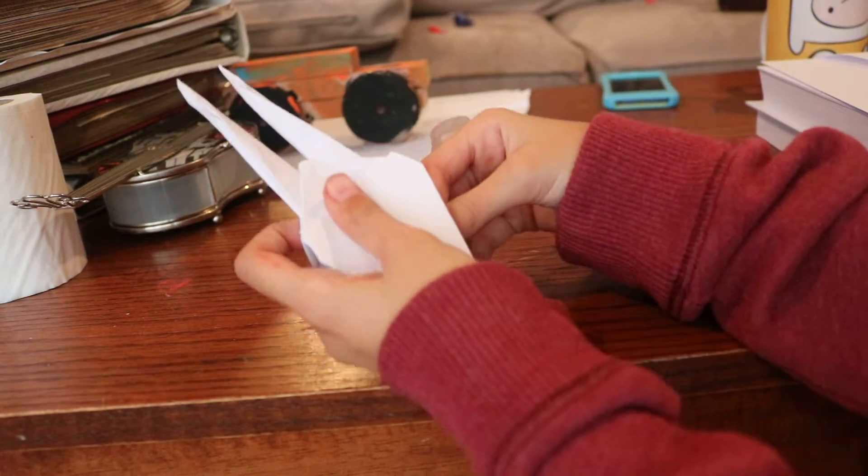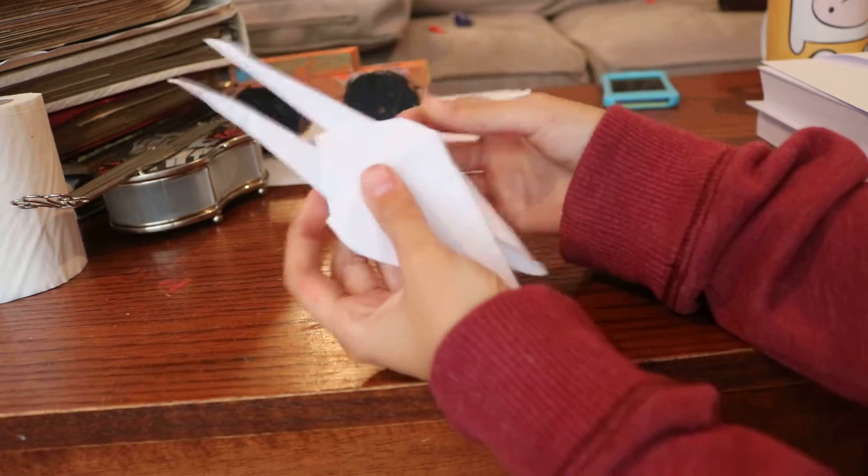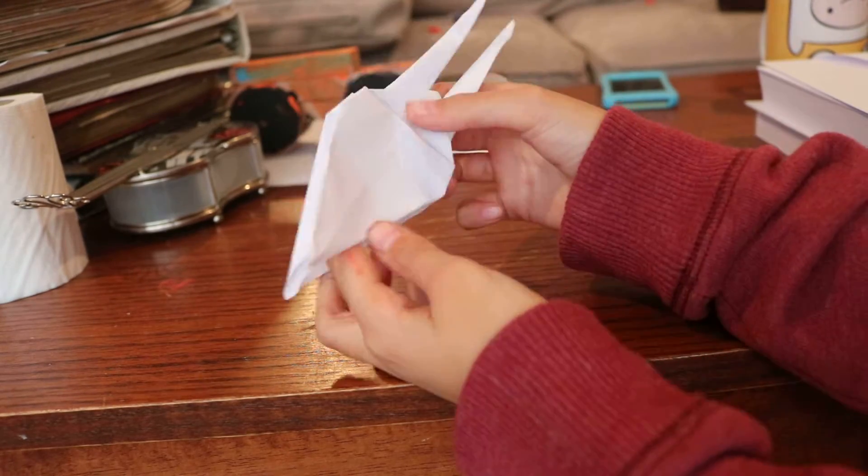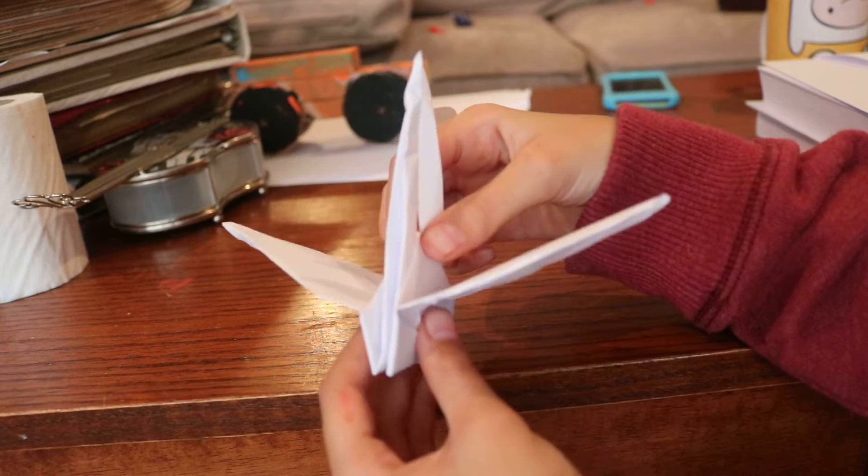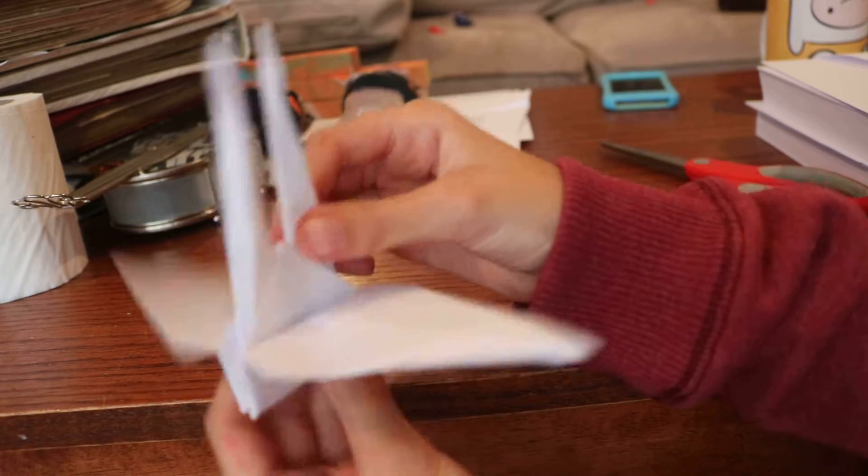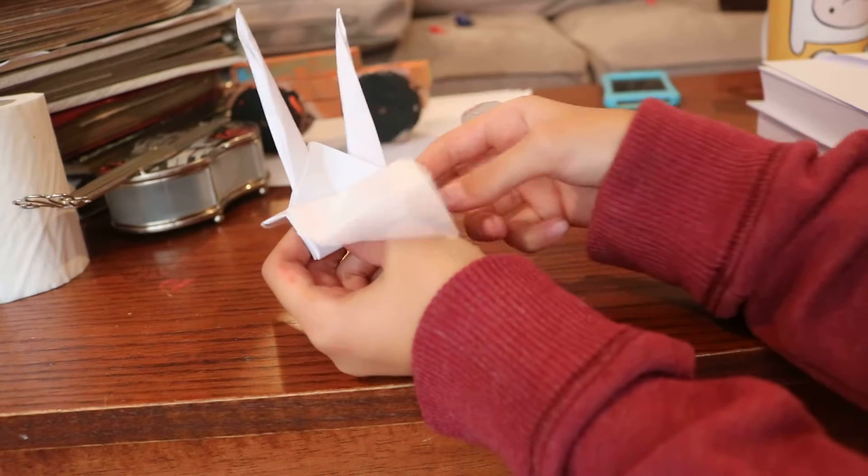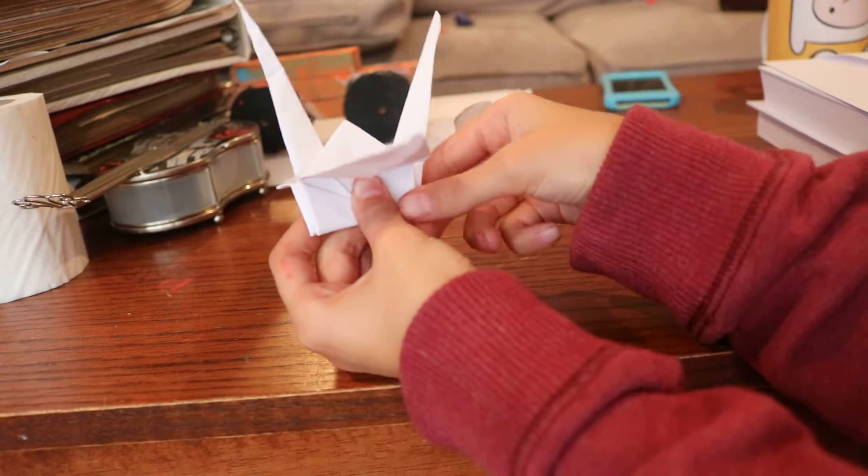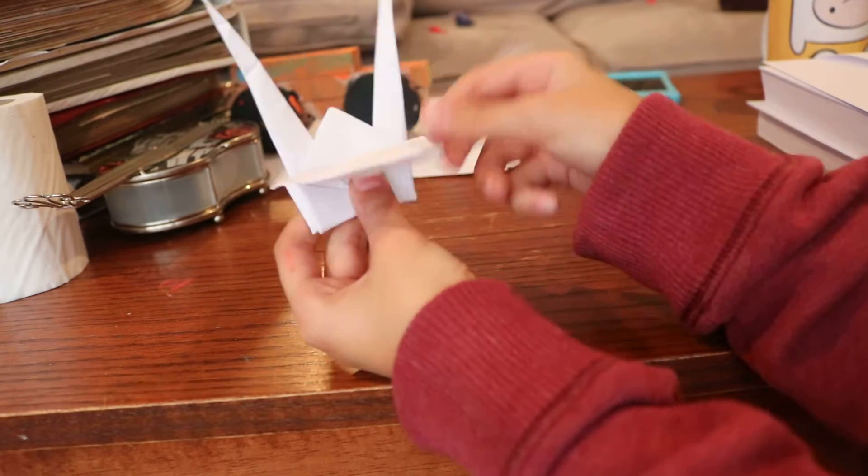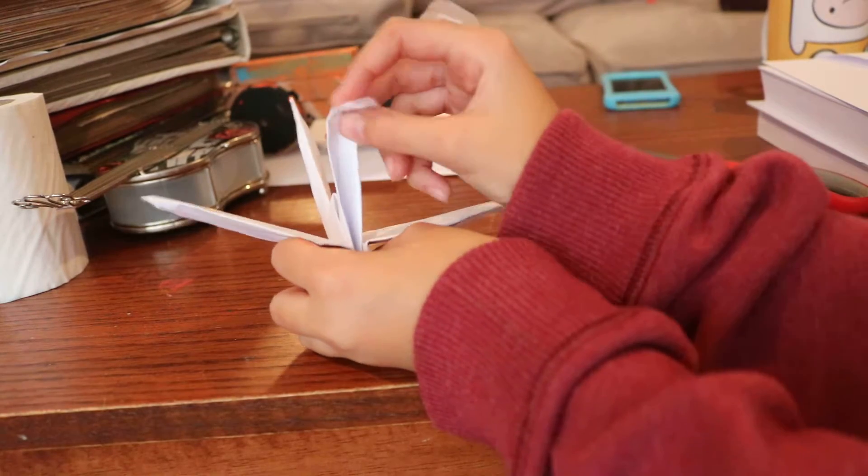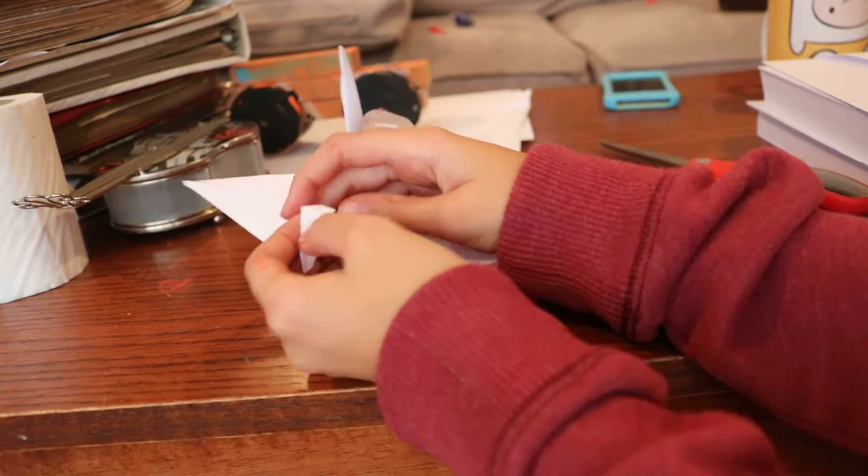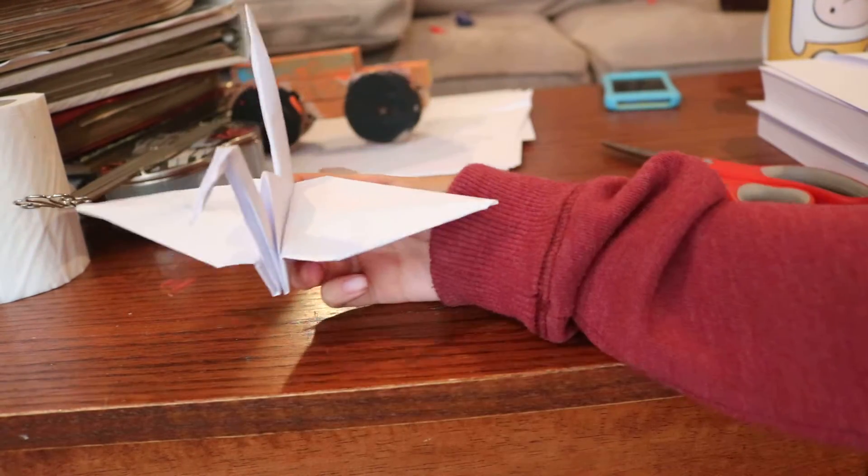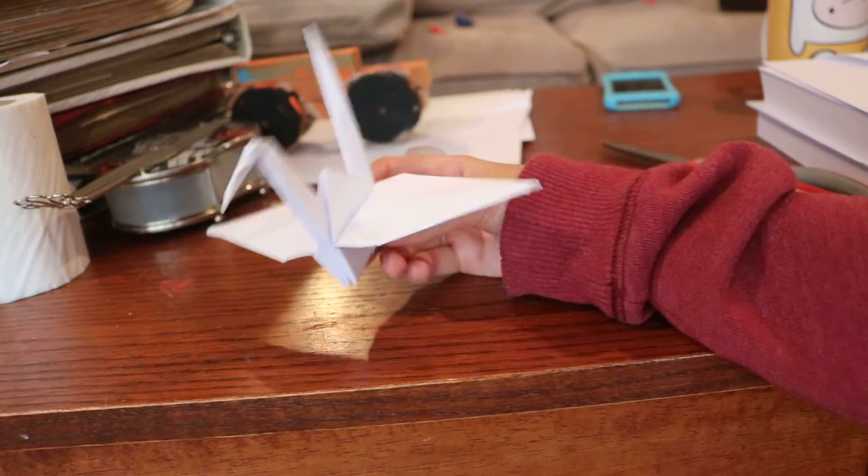Alright, go like this. I'm having a hard time. Fold it like this, go like this. You can decorate the beak if you want. And then fold it like this. And now you're done with your paper crane.